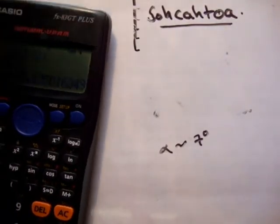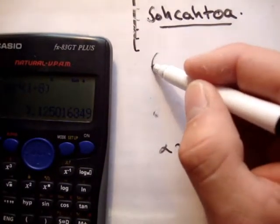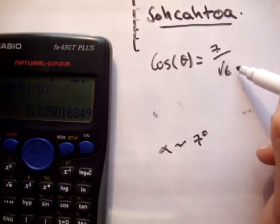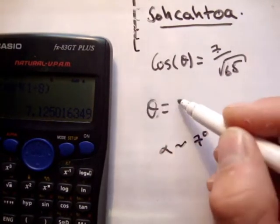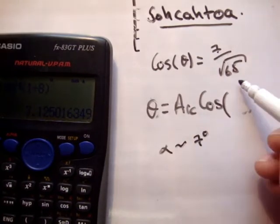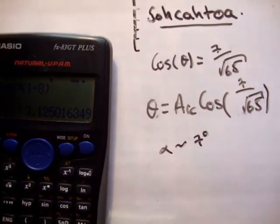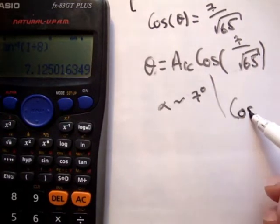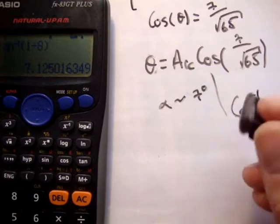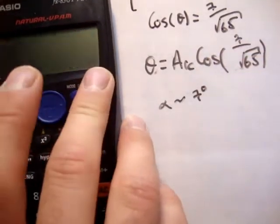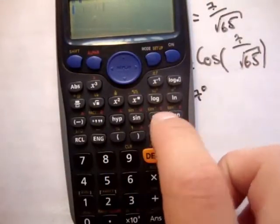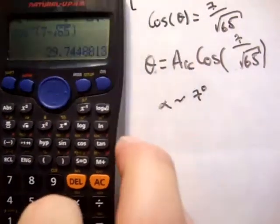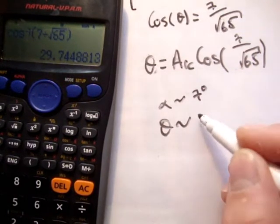Next question — what is theta? We'll use cosine this time. Cosine of theta equals 7 over root 65. Therefore theta equals the arc cosine of 7 over root 65. Remember, arc cosine is the same thing as inverse cosine — I'm using both notations so you don't get confused if you see them on a paper. Shift cosine, 7 divided by root 65, equals 29.7 degrees. So theta is approximately 30 degrees.